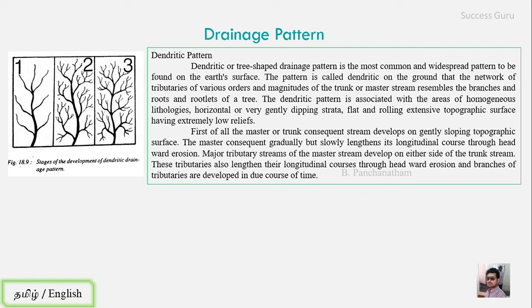The dendritic pattern forms over horizontal or very gently dipping strata, and flat or rolling extensive topographic surfaces having extremely low relief. The controlling factors are: homogeneous rock type (no structural control like folds or joints), gently dipping topography, and a low-relief surface. The high difference in elevation is low.